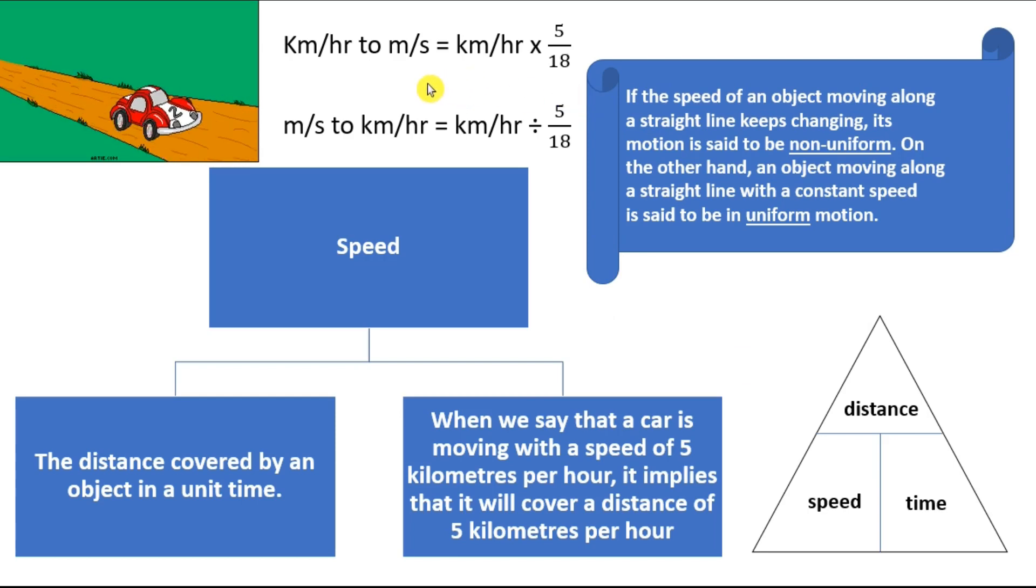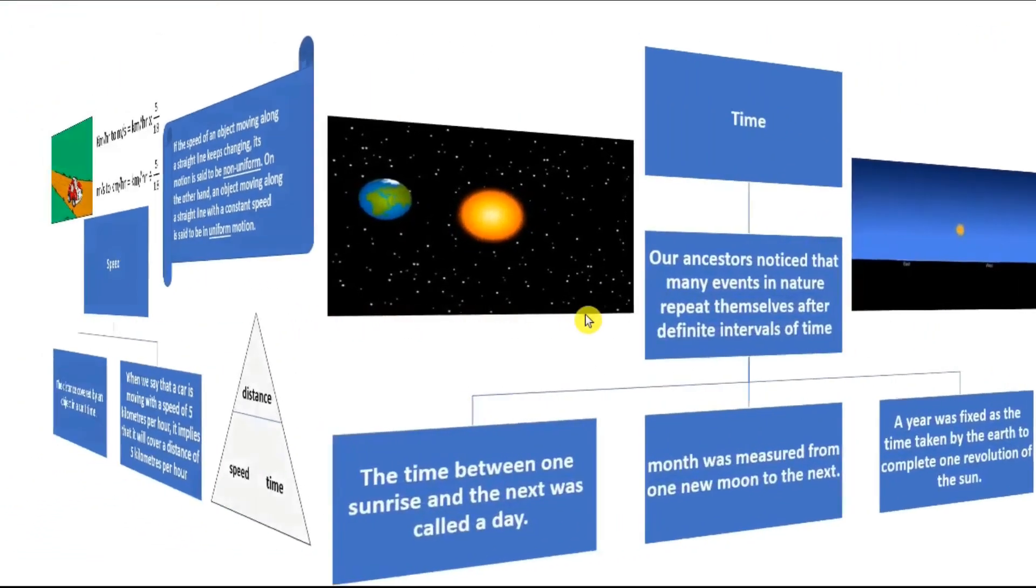If we come to the conversion of km per hour to m per second, we have two units in speed. Km per hour and m per second. If you have to convert km per hour to m per second, all you have to do is multiply it by 5 by 18. If I have to convert 5 km per hour into m per second, I will multiply 5 by 18. And if you have to convert m per second to km per hour, you have to divide by 5 by 18.